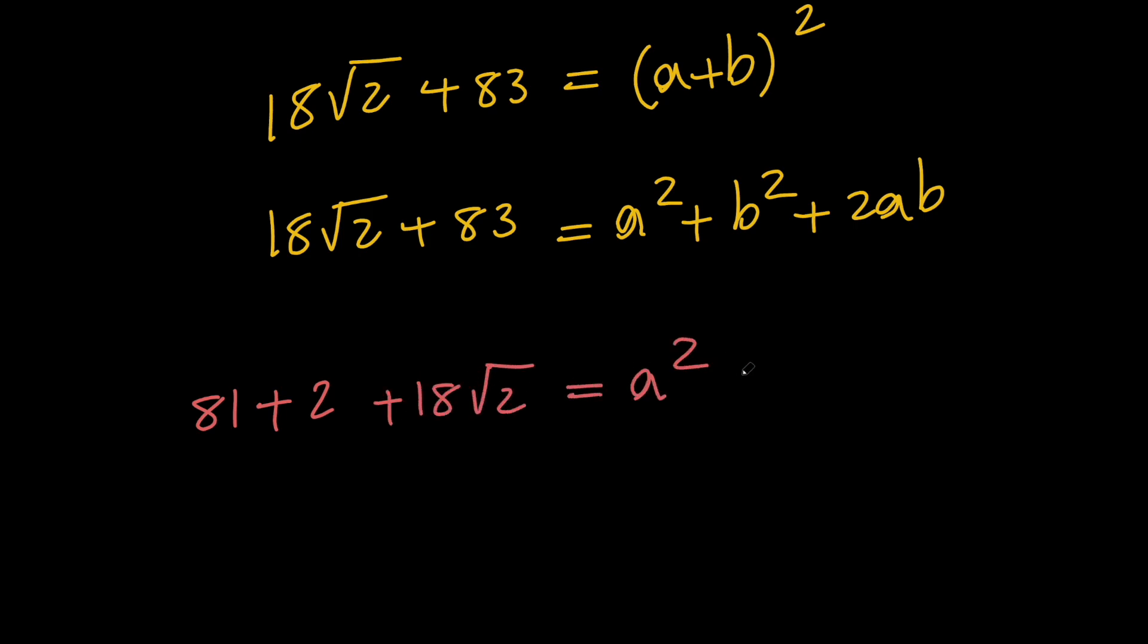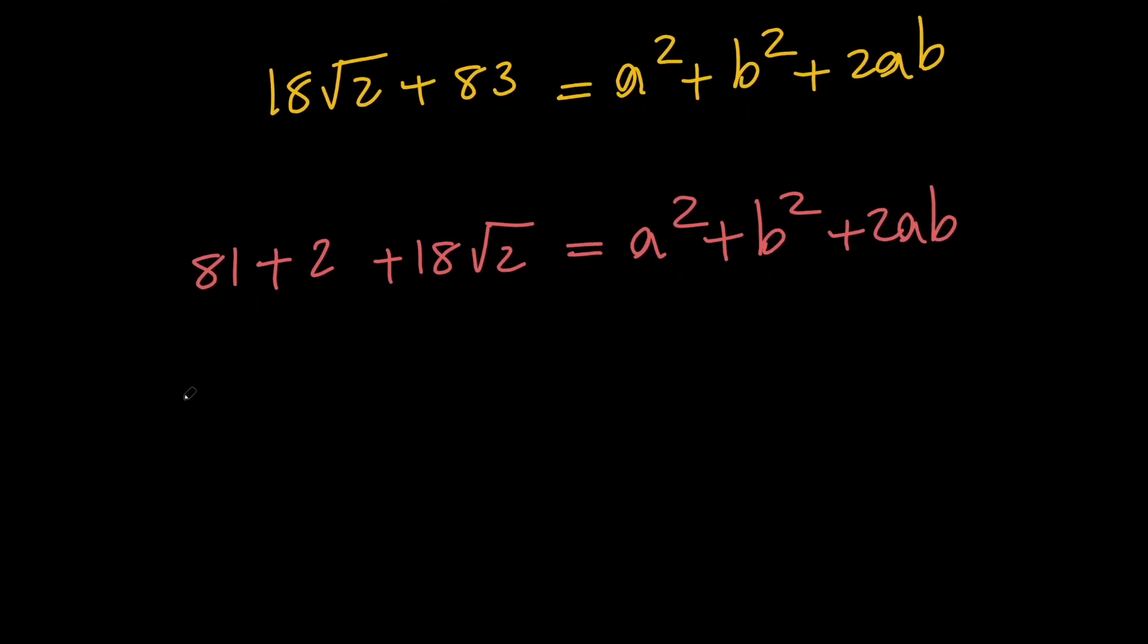So we have this and then notice that 81 is 9 squared and we can replace 2 with root 2 all squared and we can replace 18 times root 2 with 2 times 9 times root 2.